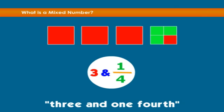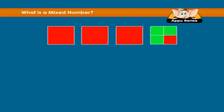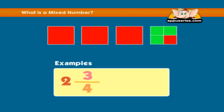Hence we see that mixed numbers have a whole number part and a fraction part. Examples: two and three fourths, and six and a half.